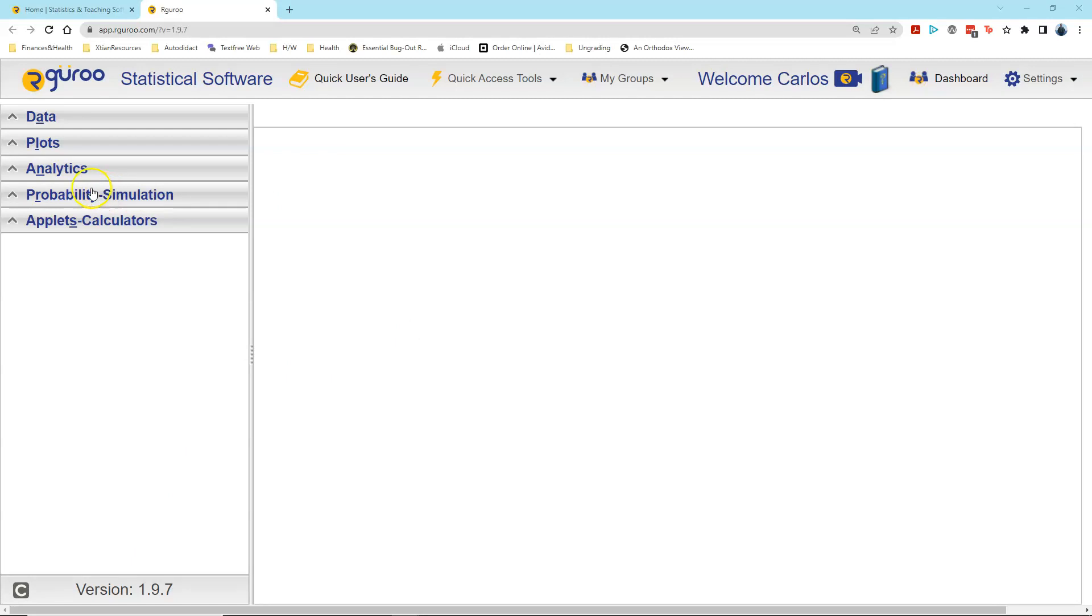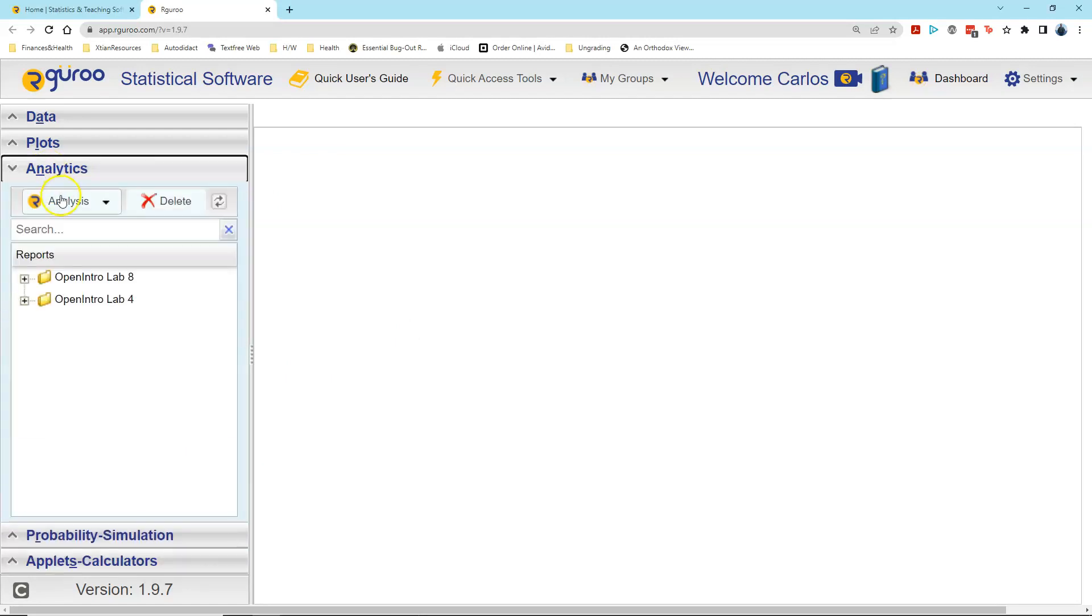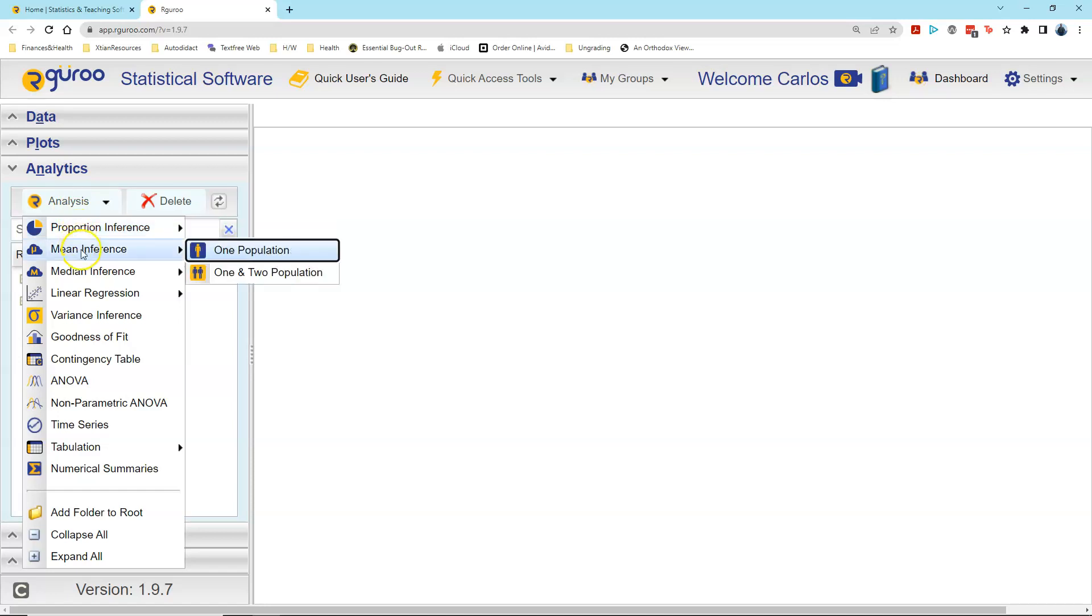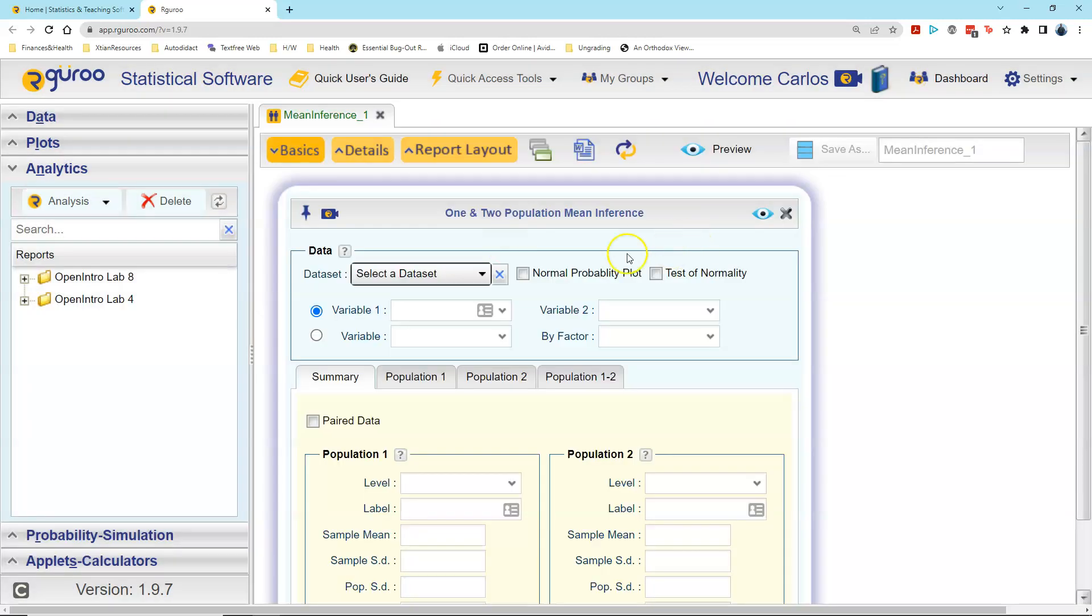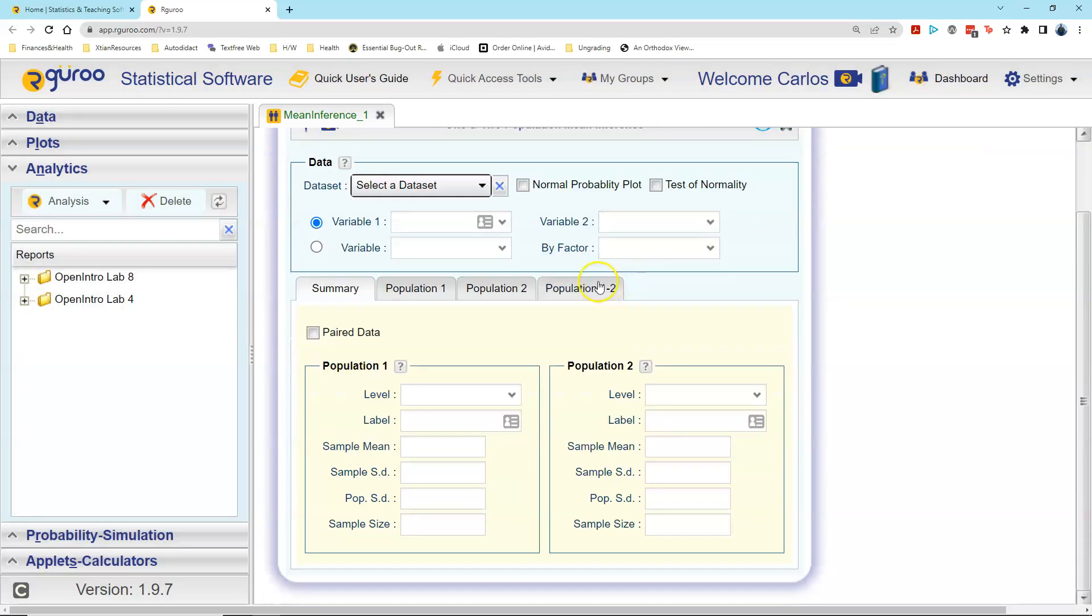Within our guru, we start by going to analytics, left click on that, left click on analysis, come down to mean inference, and we're going to select the drop down menu item, left click on one and two population. We begin, we're not going to select the data set because we're entering in the values directly, so I come down here to the summary. I left click in the label area and I'm going to type in ESCs, that's the label for the first population of data. We know that our sample mean was 3.50, sample standard deviation was 5.17, and I skip on down to the sample size which was size nine.